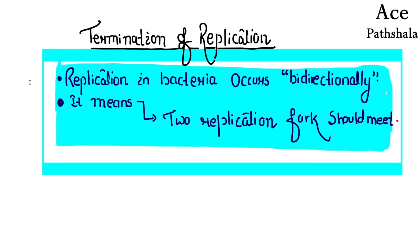In the last video we discussed how replication occurs in DNA, i.e. initiation and elongation, in E. coli mainly. And today we will discuss termination of replication. In terms of termination, what does termination mean? It will stop any process. So when the replication is initiated, it will also terminate.